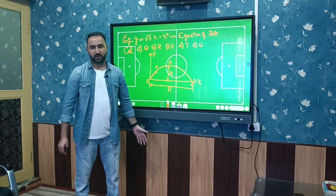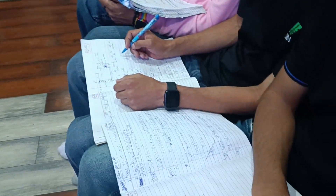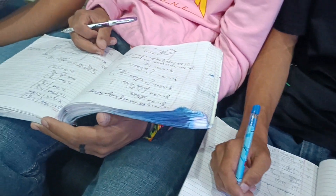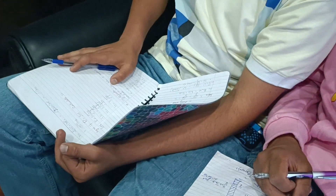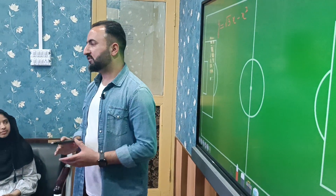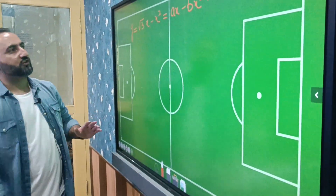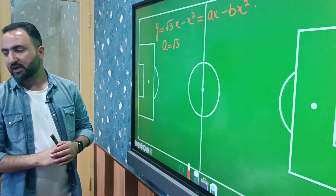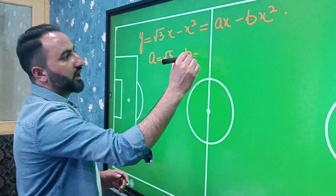For part (a), we calculate the initial angle of projection. First, compare the given equation with the generalized quadratic equation of projectile motion: y = ax − bx². Comparing, the value of a is equal to √3 (coefficient of x), and the value of b is equal to 1.